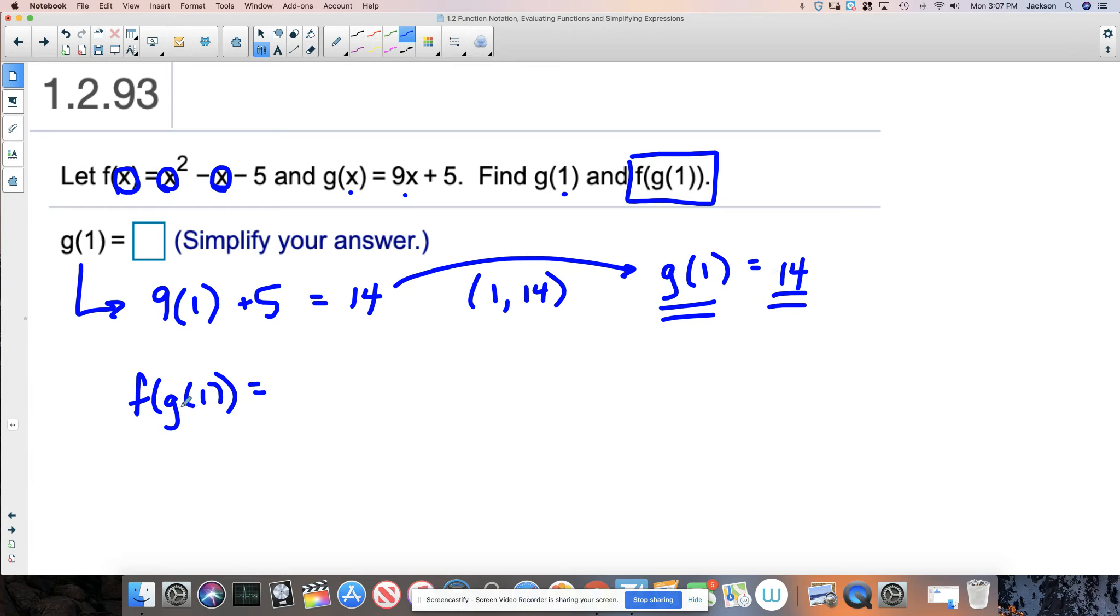So really what this is saying is instead of f of g of 1, now that we know what g of 1 is equal to, we can say f of 14, right? I've put this in place of this entire statement. Not the 1, but the entire statement, g of 1. Because remember that g of 1 is talking about the output from g when I plug in 1.